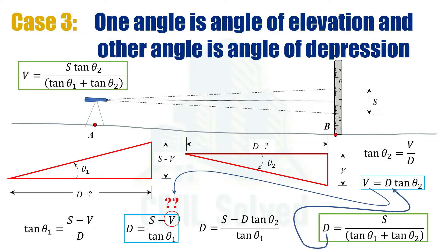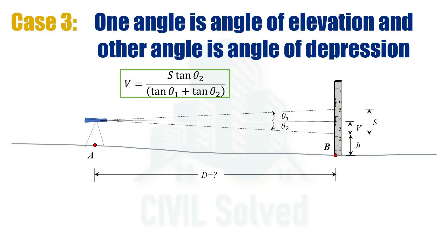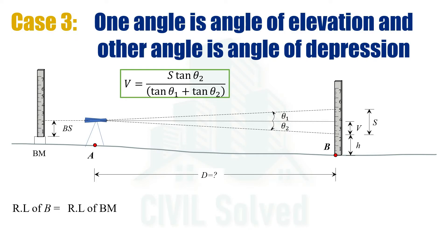Sometimes we are asked to calculate the reduced level at different points. In this case, we are asked to calculate the reduced level at point B. A point of known reduced level should be given — let's say that is the benchmark. Placing the staff there and taking the backsight reading, the reduced level of the instrument axis would be the reduced level of the benchmark plus the backsight reading. Since the instrument axis is higher than point B, in order to move down we need to subtract the distances v and h, giving us the final equation for the reduced level of point B.